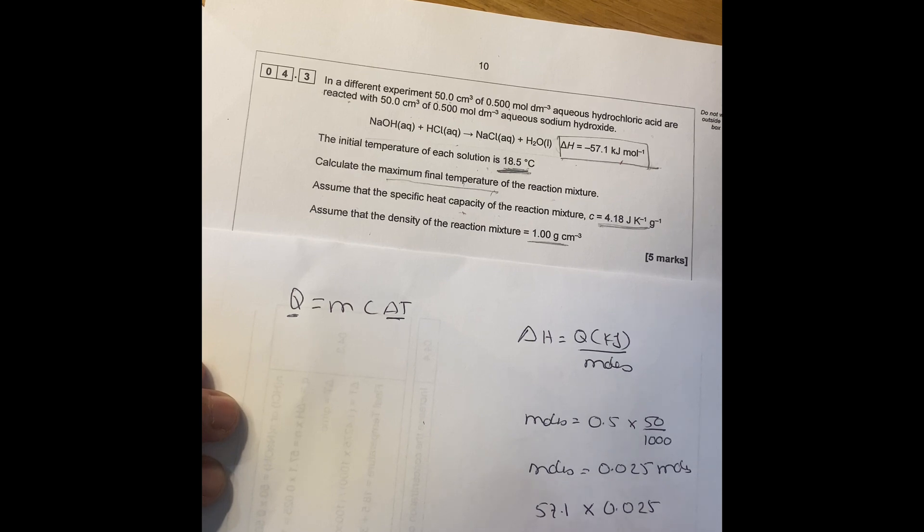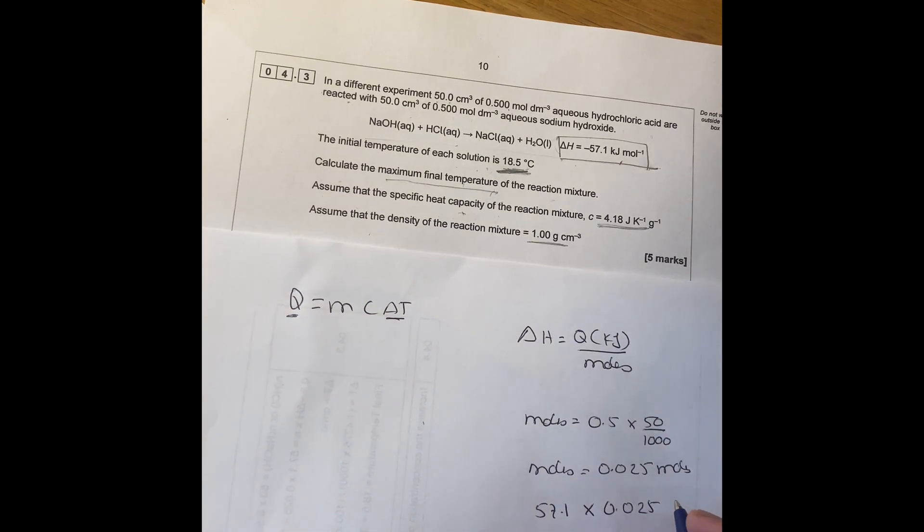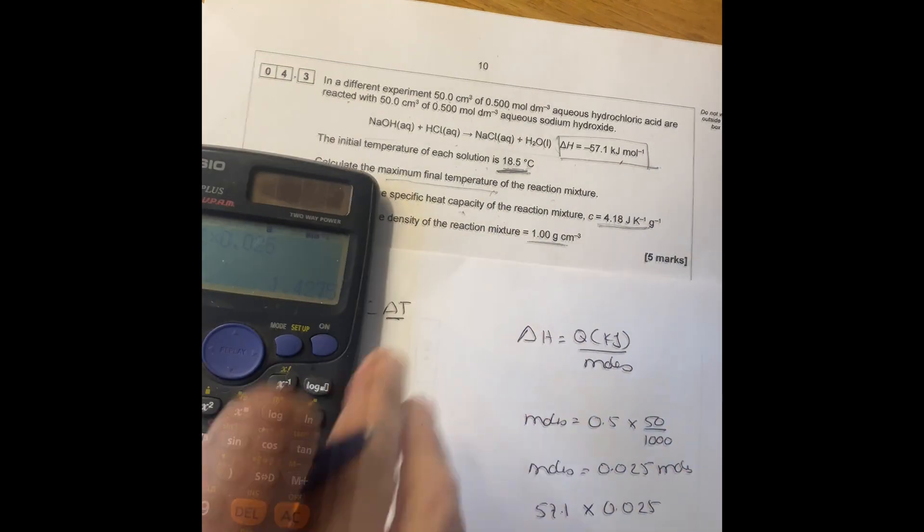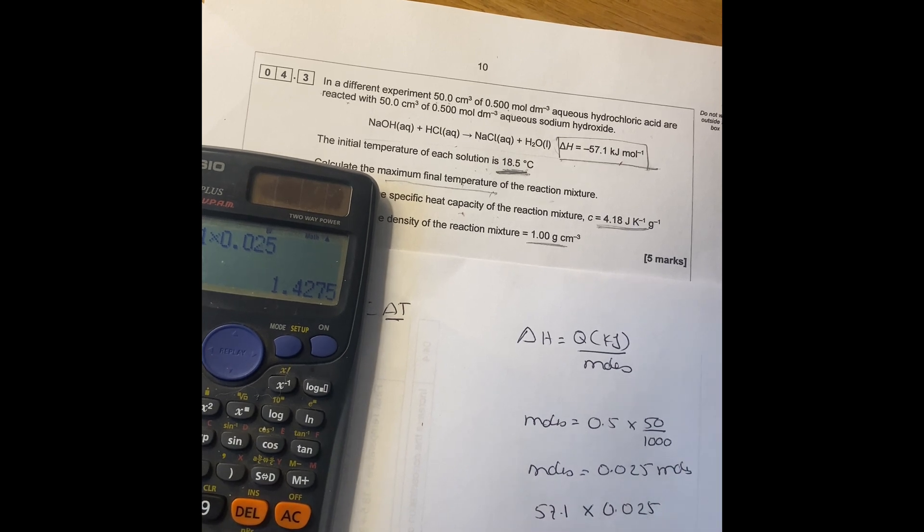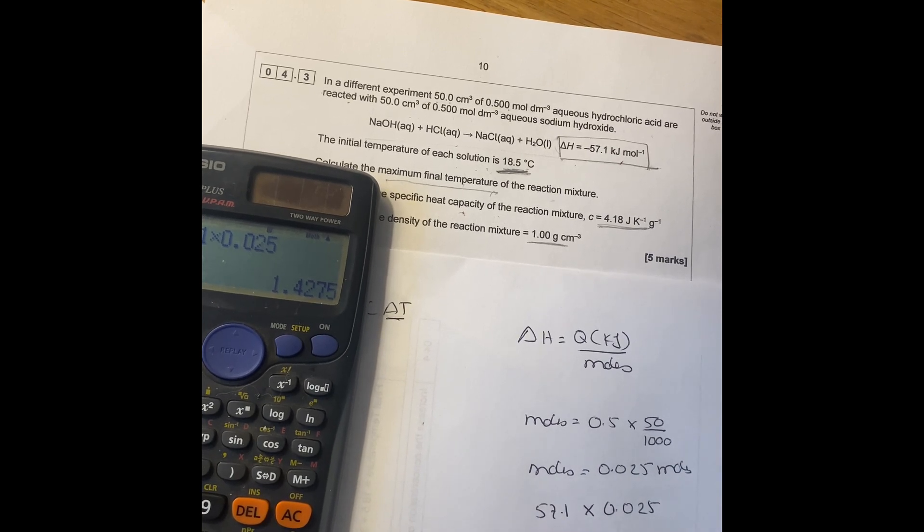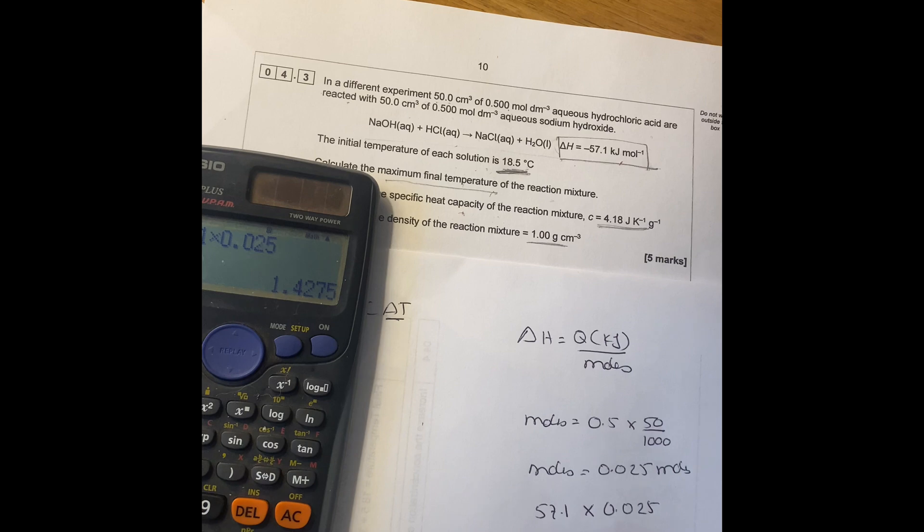So we know delta H is 57.1 times moles is going to give you your Q in kilojoules. Q in kilojoules equals to 1.4275 kilojoules. Now we need to change this to joules.